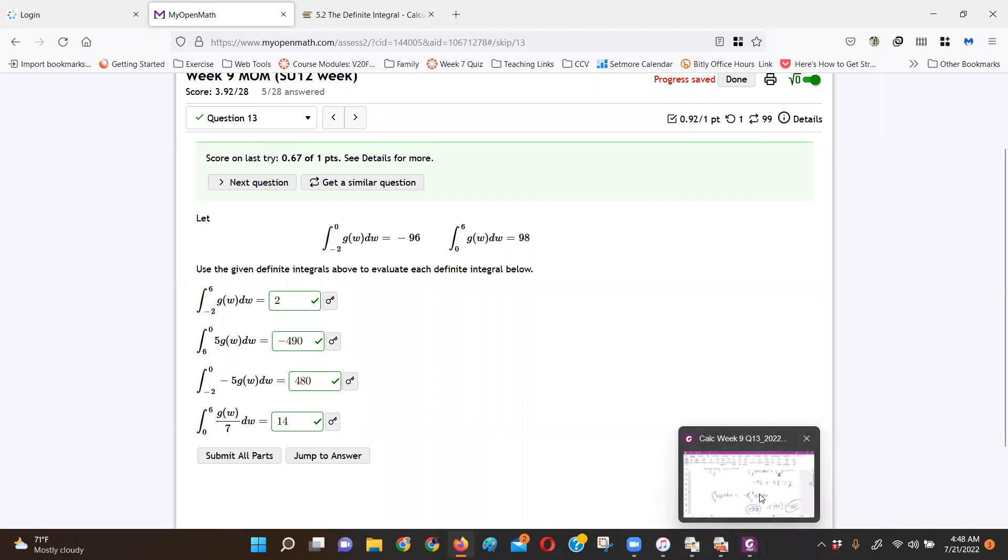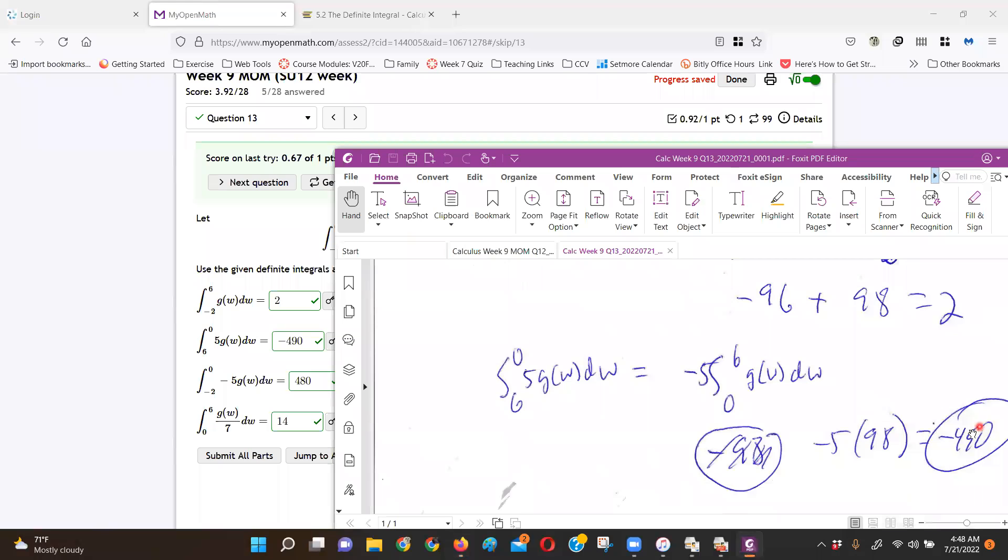So let's come back and look at my work. The negative 490. So I brought the 5, negative 5, I brought the 5 out, made it negative to reverse the 0 and the 6, and then just multiply that 98 by that.